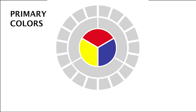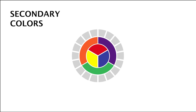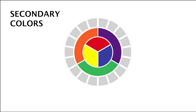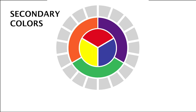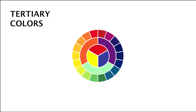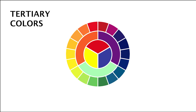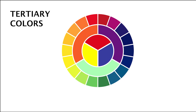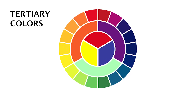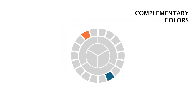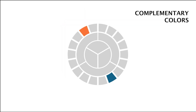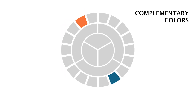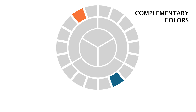Secondary colors are created by mixing two primary colors — for example, mixing red and blue gives you purple. Tertiary colors are made by mixing a primary color with a secondary color next to it on the color wheel. Complementary colors are colors that are opposite each other on the color wheel, such as blue and orange.